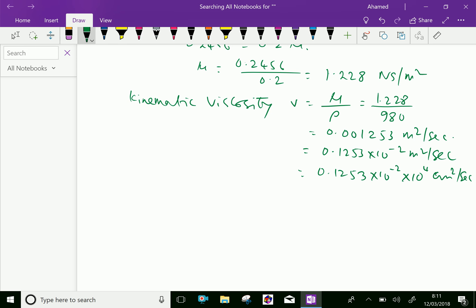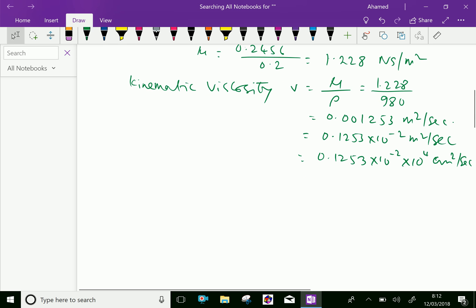We know that centimeter squared per second is stokes. So which equals 0.1253 into 10 to the power of minus 2 into 10 to the power of 4 is 10 to the power of 2 centimeter squared per second.